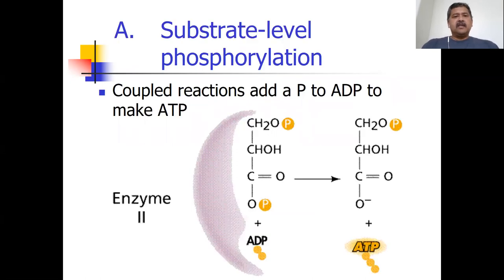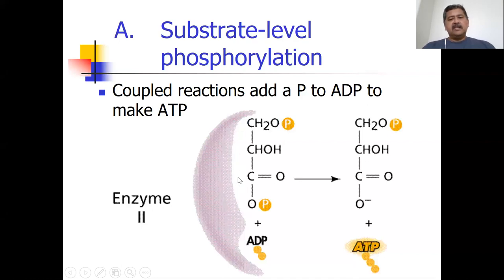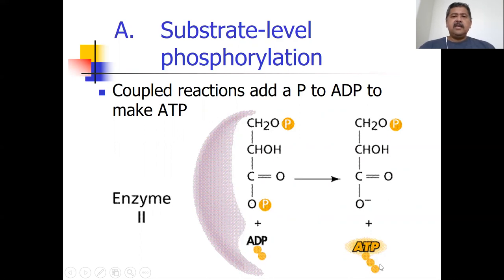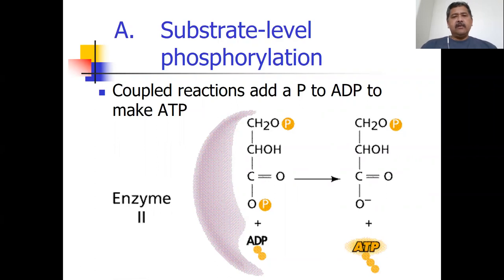First, let's look at substrate level phosphorylation. This moon-shaped thing represents an enzyme with an active site. The chemical PEP sits in the active site of this enzyme, and ADP sits in another active site. This is a coupled reaction — the phosphate group moves from PEP over to ADP, creating ATP. So we have two coupled reactions: phosphoenolpyruvate going to pyruvate, and ADP going to ATP, occurring together.